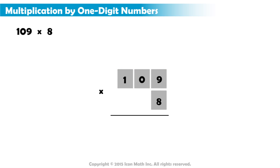Our first step is to multiply the 8 by the 9. 8 multiplied by 9 is 72. We place the 2 in the right-most column of our answer. Then, we write the 7 above the 0.